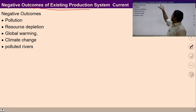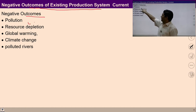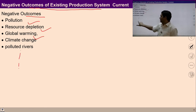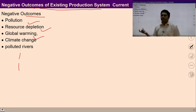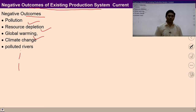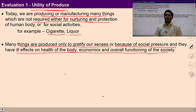The negative outcomes of existing production systems arise because of ignorance of the three criteria we just discussed. There are many negative outcomes like pollution, resource depletion, global warming, climate change, polluted rivers, and many more problems. The whole world is now concerned about these problems. In fact, our development has become unsustainable due to these problems and ignorance of the right criteria of evaluation. These outcomes are because of ignorance of human-friendliness, eco-friendliness, and utility of the produced things.